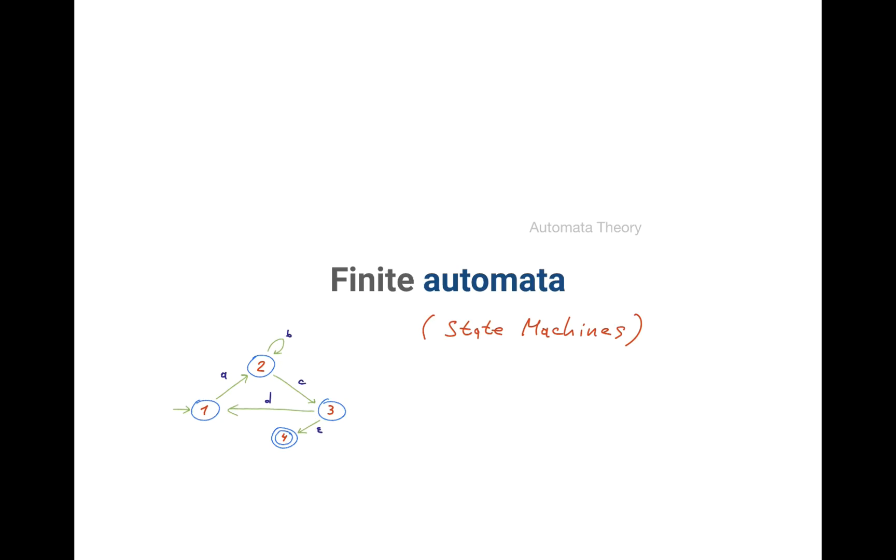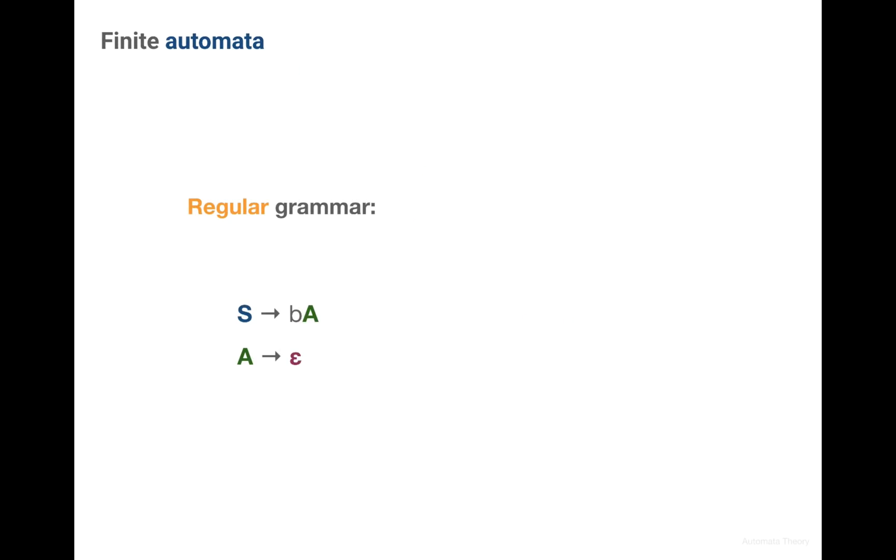Now let's see how the state machines are related to the regular expressions and used to implement them. Recall from the previous lectures about formal grammars and BNF notation that a regular grammar always has just one non-terminal at the very right position of the right hand side.